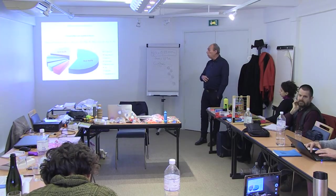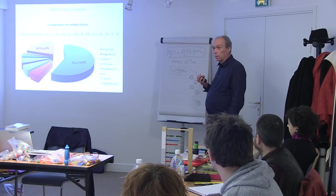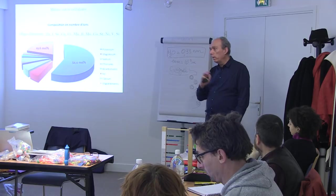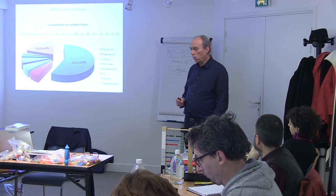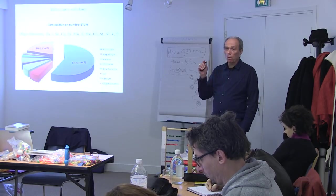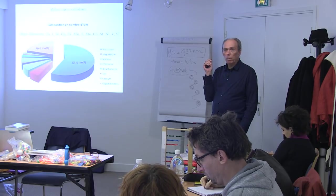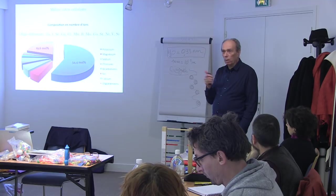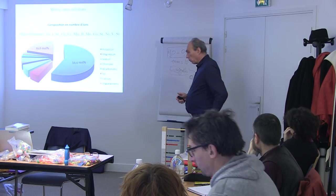Il faut bien connaître le rôle des ions. Si vous augmentez très fortement le sel, le sel va attirer l'eau. Si vous n'avez pas assez de sel, l'eau va vers des milieux plus salés. Le bicarbonate, lui, c'est un anion de fonction — directement lié à la régulation du pH. Dans l'eau, il y a trois notions importantes : la résistivité, pilotée par le chlorure de sodium ; le pH, régulé par le bicarbonate ; et l'état redox.